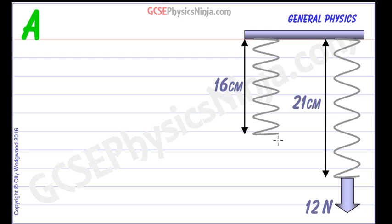Now first of all we need to find the extension of the spring and that's fairly straightforward because it's just the difference between the original length and the new length. So we would do 21 minus 16 and that would give us an extension x equals 5 cm.